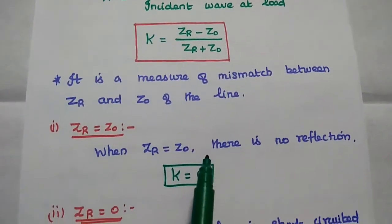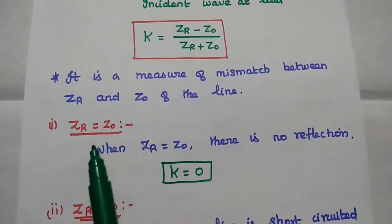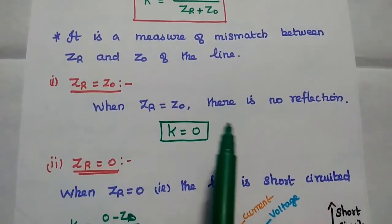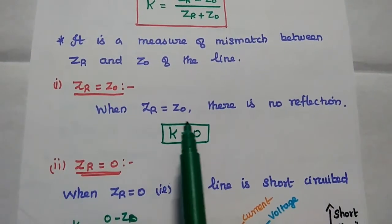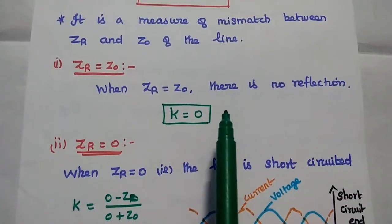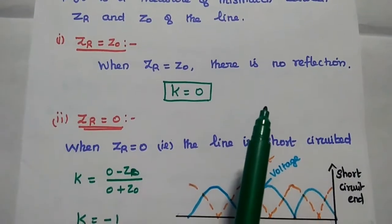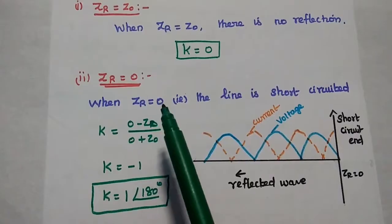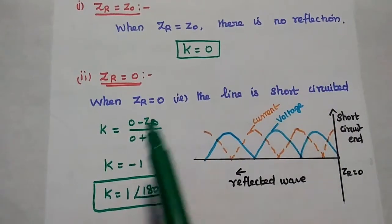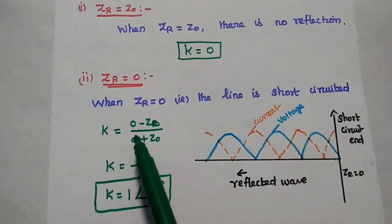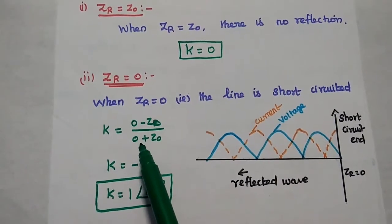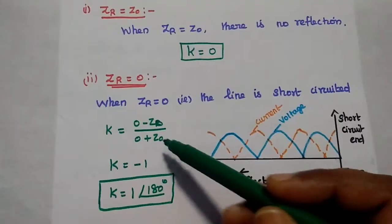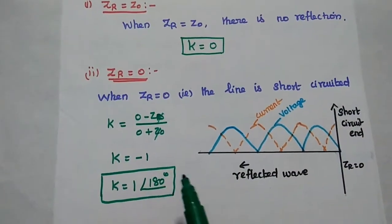There are three cases we can consider with respect to ZR and Z naught values. When ZR is equal to Z naught, there is no reflection, because the load impedance is perfectly matched with the characteristics impedance. The next condition is ZR equal to 0. When ZR is equal to 0, that is the line is short-circuited, the reflection coefficient value is equal to 0 minus Z naught divided by 0 plus Z naught, giving minus Z naught by plus Z naught, which equals minus 1.